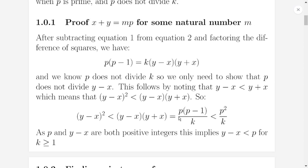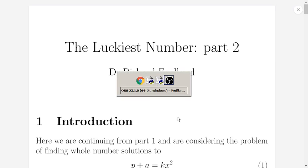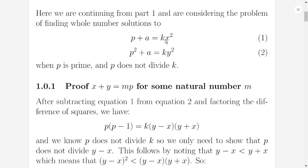It's based on a recent video by Michael Penn where he looks at this problem where the value of k equals 2 and a equals 1. So p plus 1 equals 2x squared, p squared plus 1 equals 2y squared. And he's looking for a prime solution. The only solution to that one is 7. Anyway, the method he used, it looked like you could apply that to different values. It doesn't have to be k equals 2 and a equals 1.